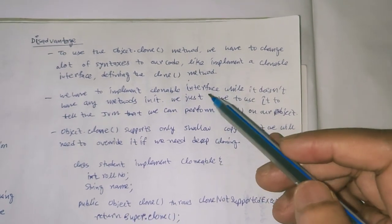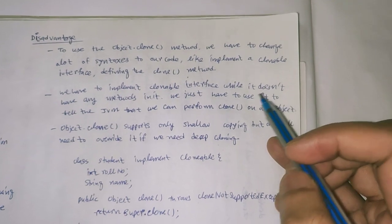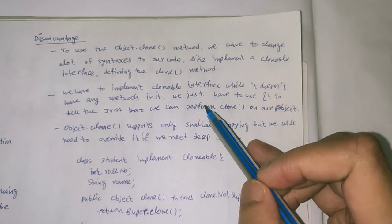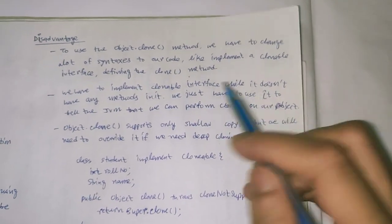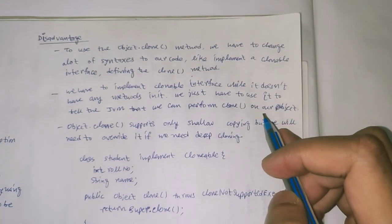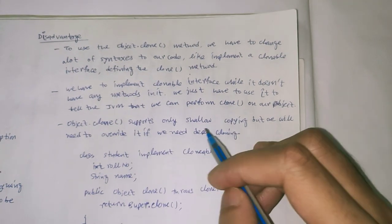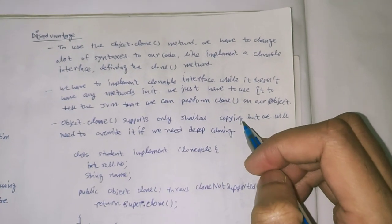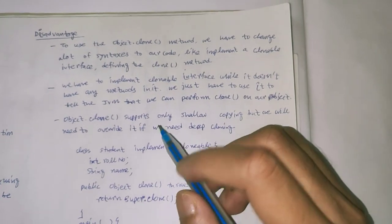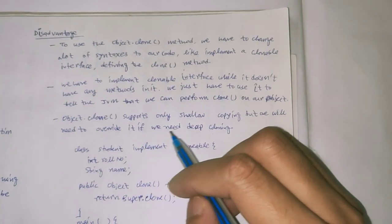Second, we have to implement clonable interface while it does not have any methods in it. We just have to use it to tell the JVM that we can perform clone method in our project. Third, object.clone method supports only shallow copying but we will need to override it if we need deep cloning.